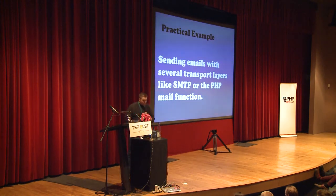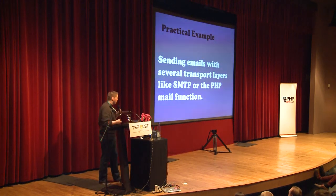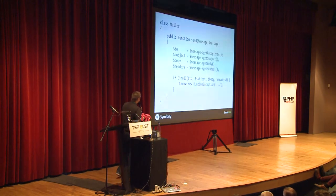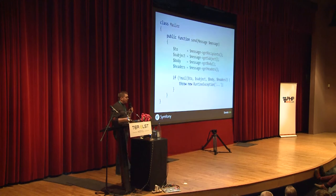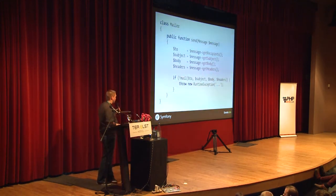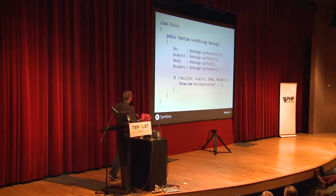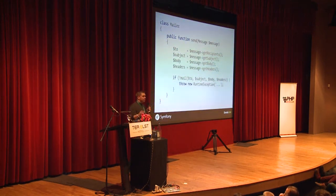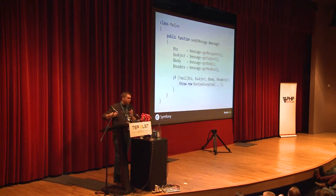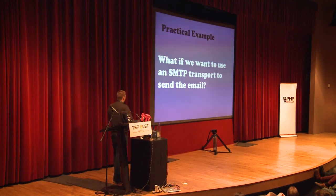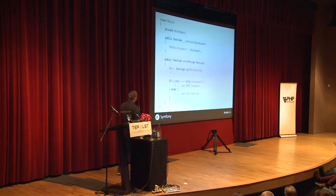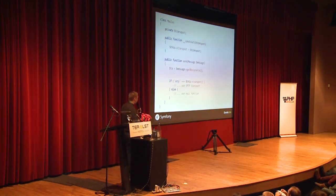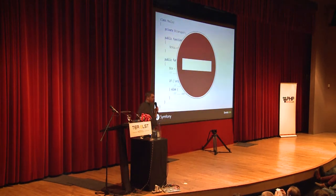Here's another example: I want to change the way my emails are sent with a mailer object. Imagine a Mailer class that receives a message object. By default I use the PHP mail function to send email. But tomorrow I may want to use an SMTP connection, or emulate email sending in a dev or testing environment. You could add a big if-condition — if SMTP equals transport, send with SMTP, otherwise use mail function — but that makes your code less flexible and less testable.